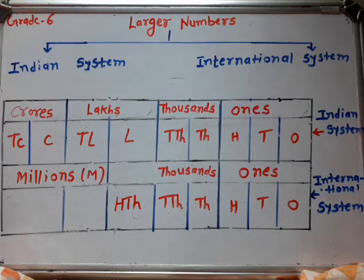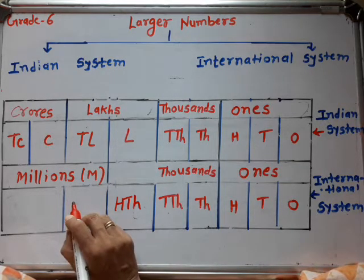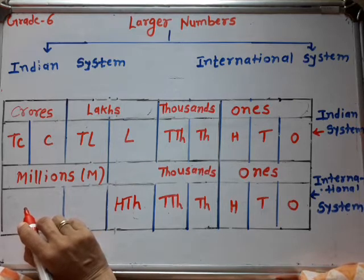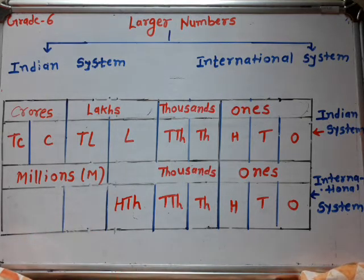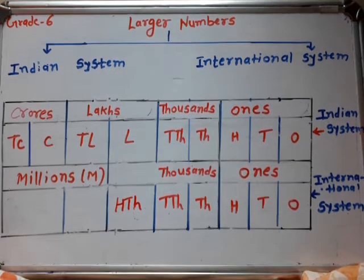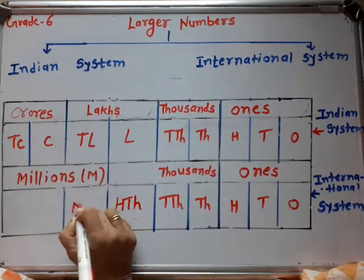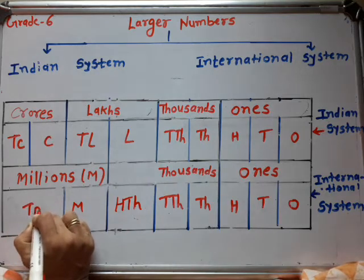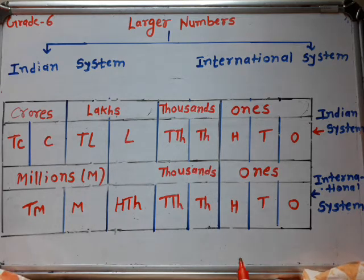The millions period is divided into million and ten million. This is the international place value system. In this chapter, we see numbers up to ten million.